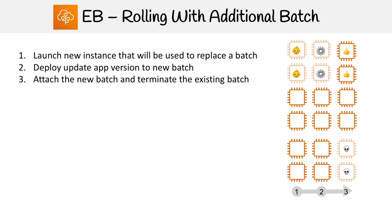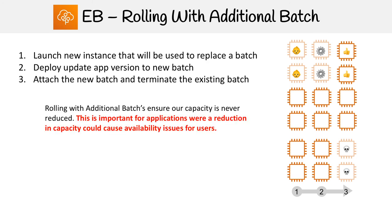The idea here is that by doing this, we're never going to reduce our capacity. This is important for applications where a reduction in capacity could cause availability issues for users. Because we saw with rolling, we will have reduced capacity for a short period of time — in this case, we'll never have a reduced capacity.